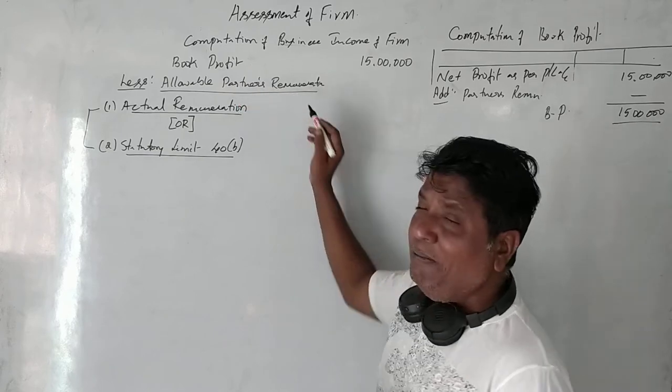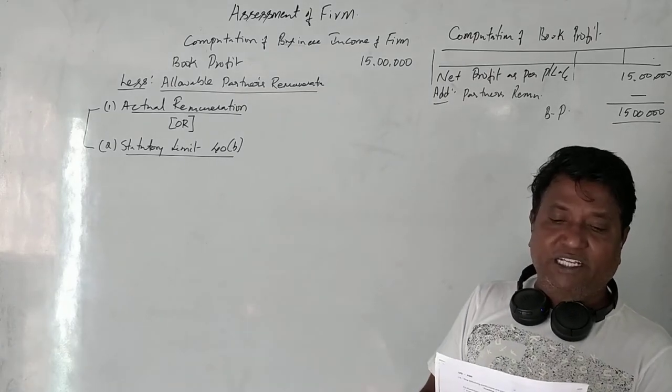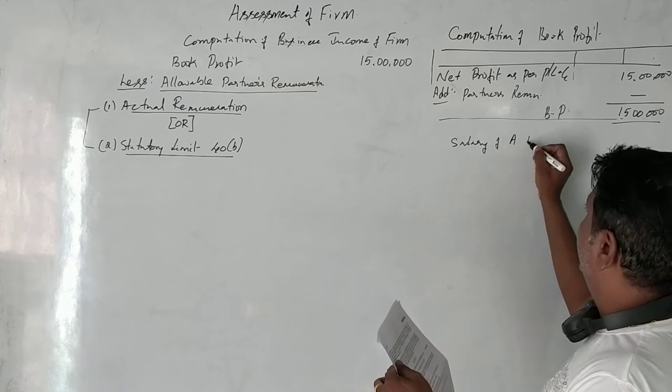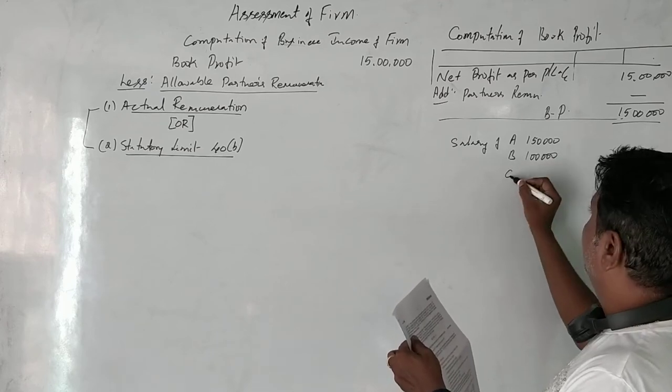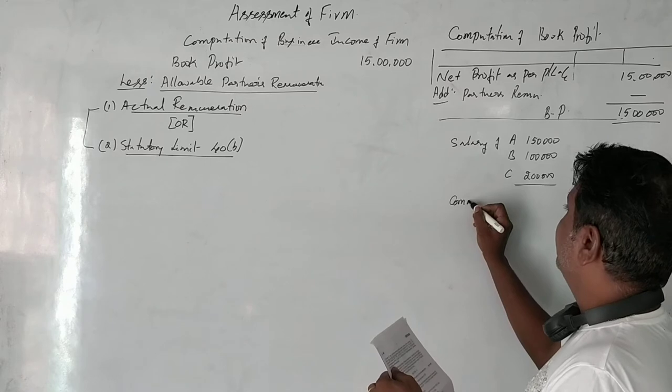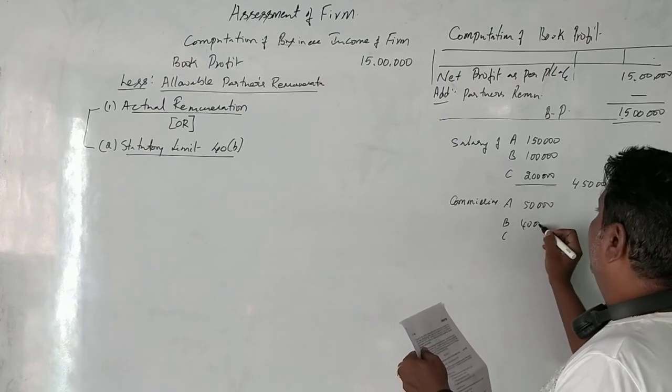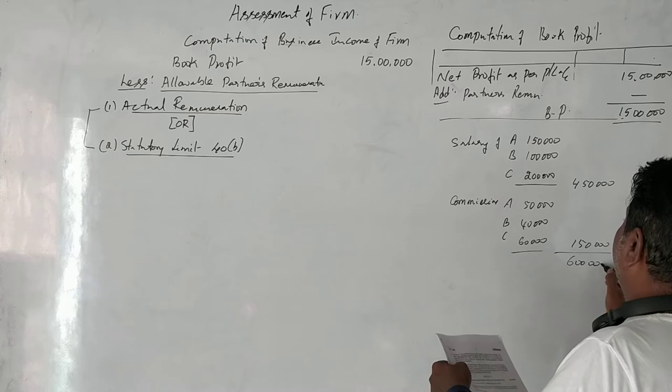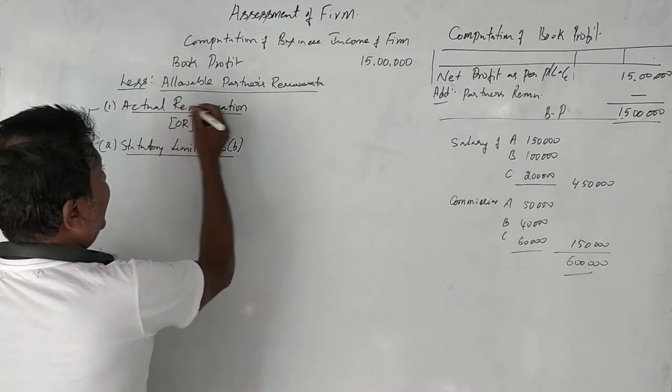Now I want to have allowable partners remuneration. First, calculate salary of A 1,50,000, B 1,00,000, C is 2,00,000, so total salary is 4,50,000 rupees. Again commission A, B, C 50,000, 40,000 and 60,000, total 1,50,000. Actual remuneration is 6,00,000.